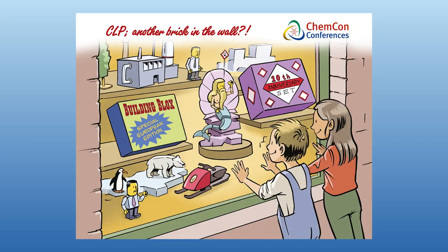At ChemCon Europe 2023 we have many interviews in store. Today on display: GHS and CLP. GHS provides a basis for harmonization of rules and regulations on chemicals at a global level. We will take a closer look into the various GHS building blocks that countries can select, including the new hazard classes that are part of the EU CLP revision like endocrine disruptors and the mobility of substances. Paul Ryan from the European Chemicals Agency and Daniel Rios of Givaudan will provide us a window to the world of GHS and CLP.